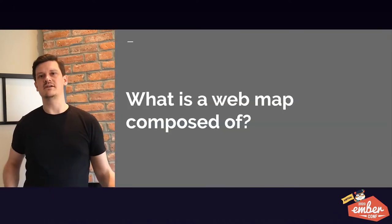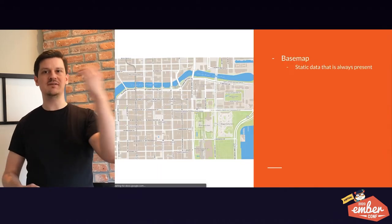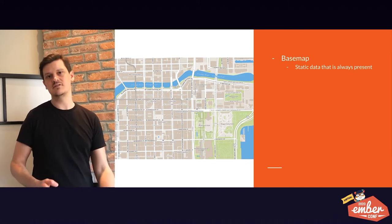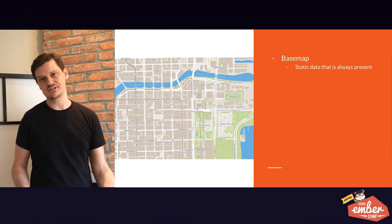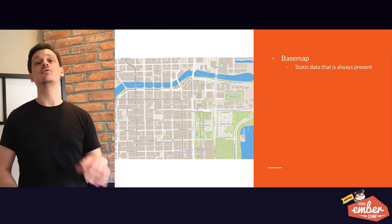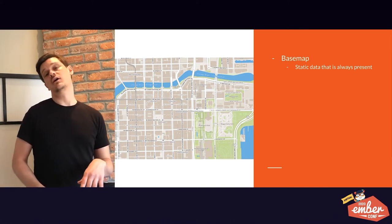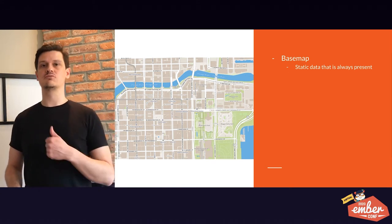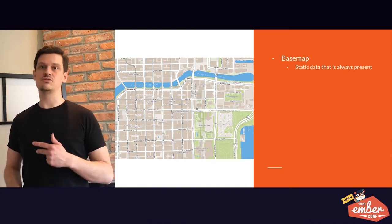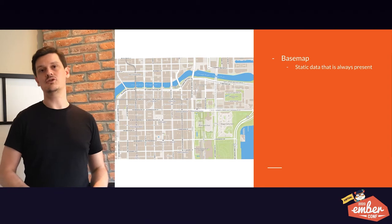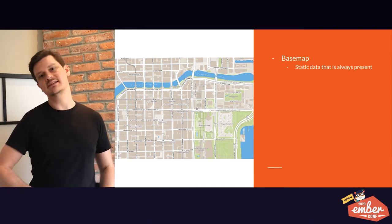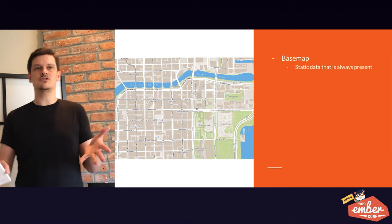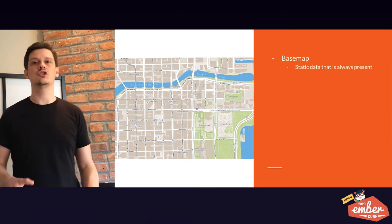What is a web map composed of? Well, first we have a base map, which is always present. It's a contextualizer — it orients the viewer to where it is in space. Streets, bridges, rivers, bodies of water, parks — these are all typically what a base map is.